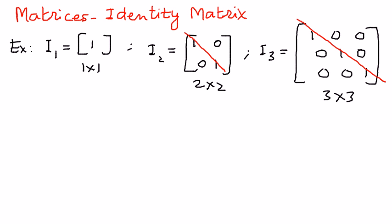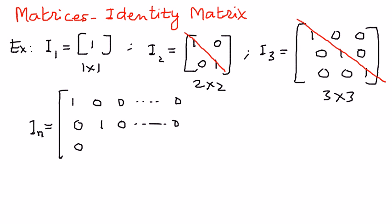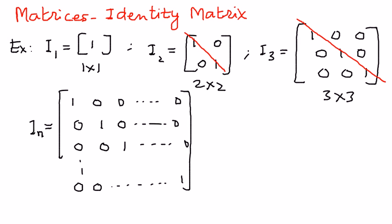An identity matrix can be of any size. If we have an identity matrix of n by n — n rows and n columns — we can write that as follows: the main diagonal entries are all 1s, and all other entries are 0s, forming an n by n matrix. As long as there are 1s along the main diagonal and 0s above and below the main diagonal, those types of matrices are defined as identity matrices.